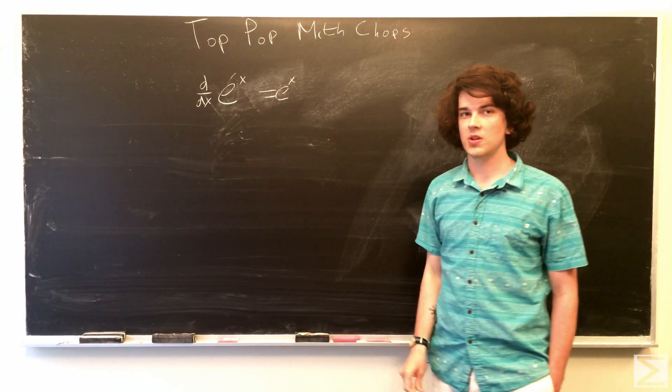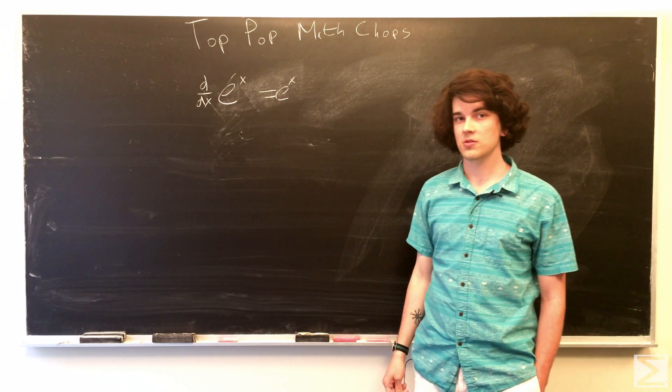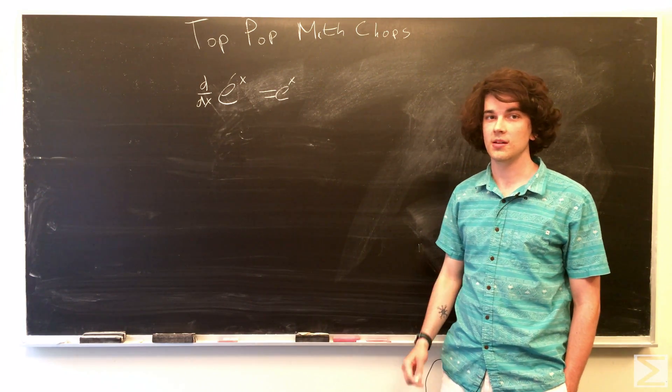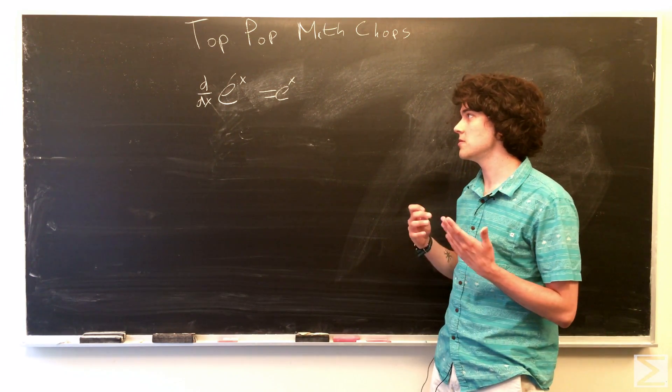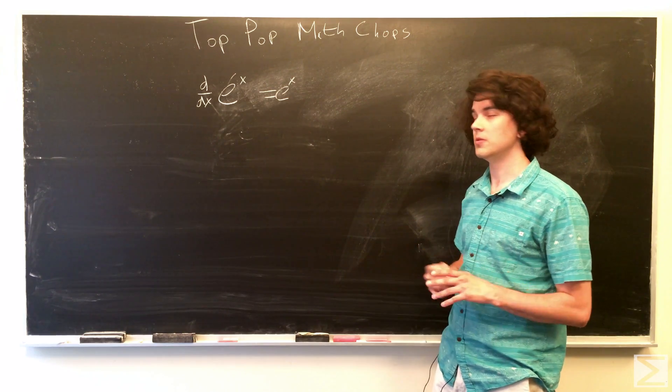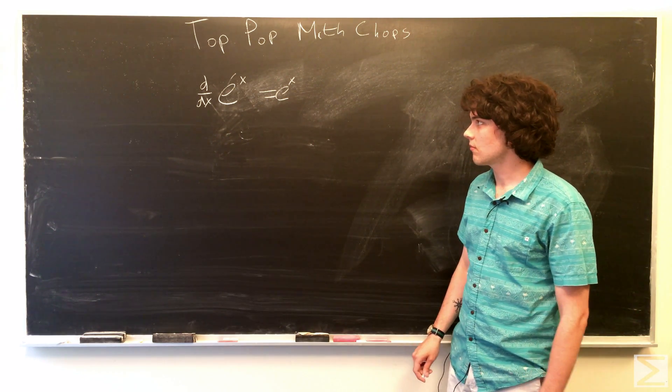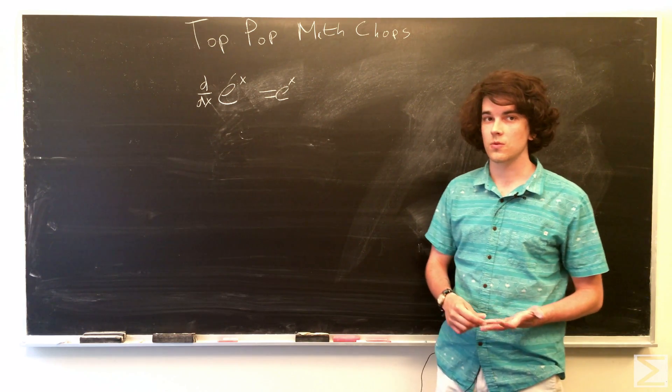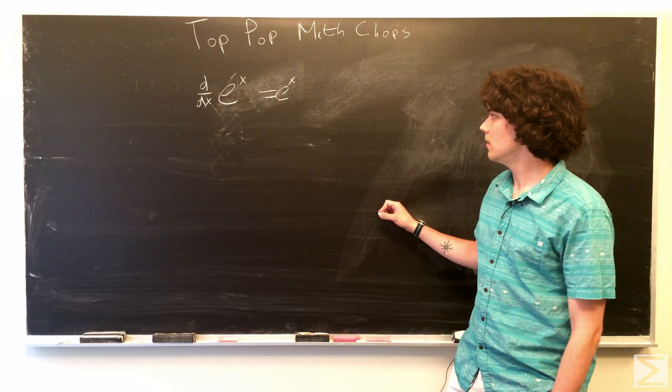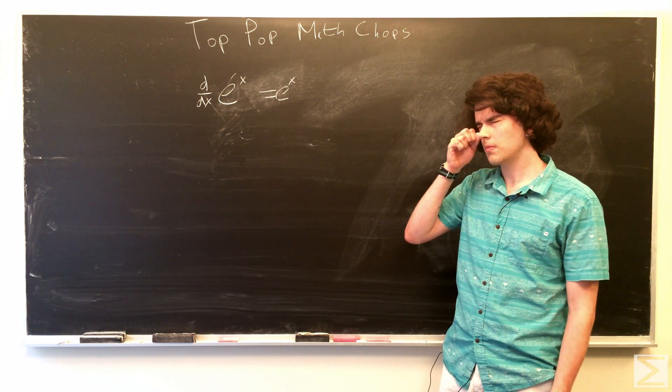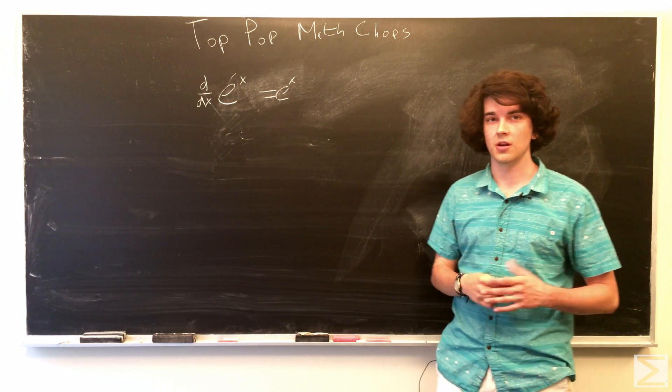And, this proof also uses another definition of e to the x, which is the derivative of e to the x. It's the function of which the derivative is equal to the function. So, we also know that, and we're going to use the classical definition of derivative.